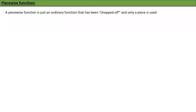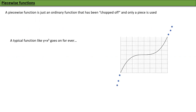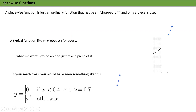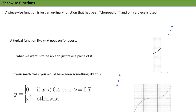These are not smooth functions but different pieces of functions glued together, which is where piecewise functions come in. A piecewise function is just an ordinary function that has been chopped off so only a piece is used. A typical function like y = x³ goes on forever, but we want to take just a piece. In your math class you would have seen something like: y = 0 if x < 0.4 or x > 0.7, and y = x³ otherwise. If you plot this, the function is chopped off at x = 0.4 and x = 0.7, and set to zero outside.